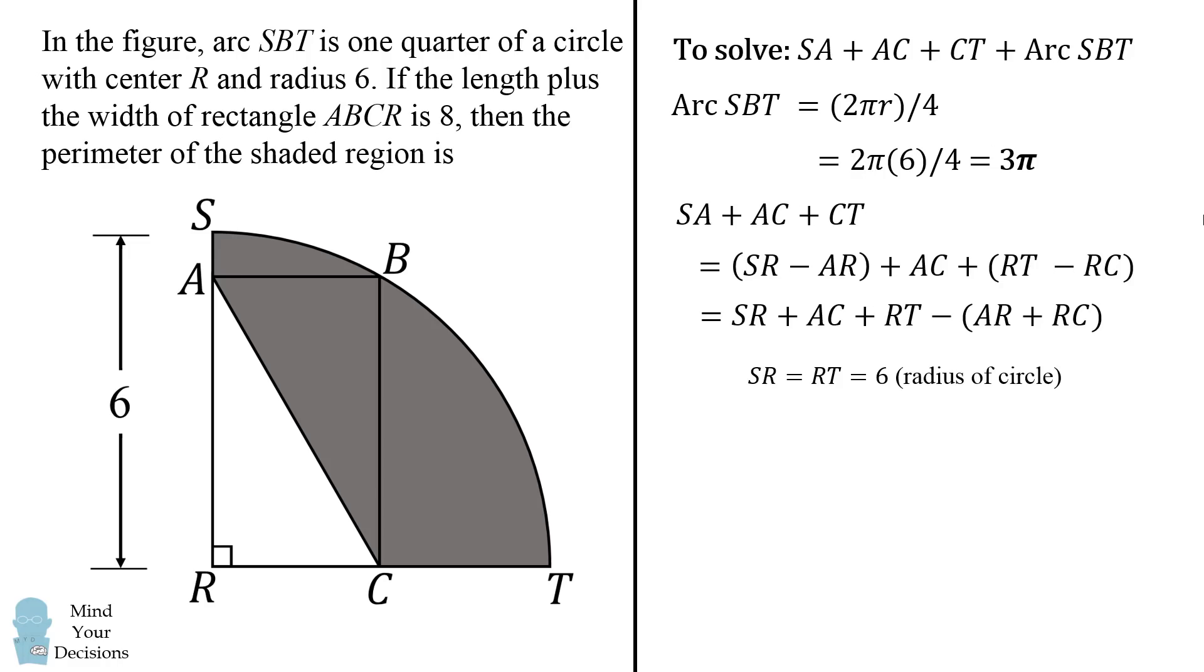Well, AC is a diagonal of this rectangle, so it'll be equal to the other diagonal, which is RB. And RB is also a radius of the circle, therefore this is equal to 6, which means AC is also equal to 6.